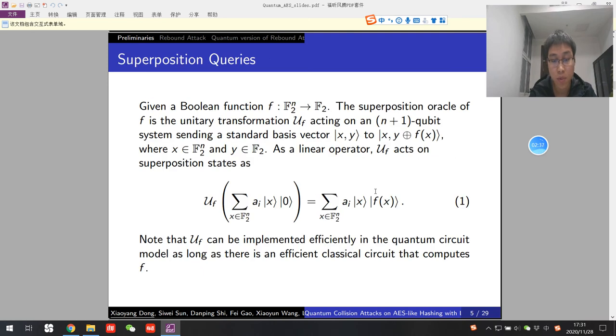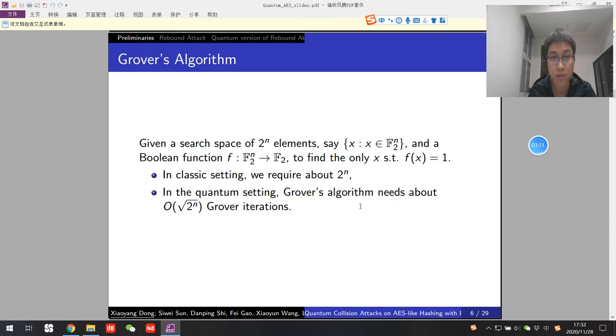The most important feature of quantum computation is that we can make superposition queries on quantum oracle. Given a boolean function f, the superposition oracle is the unitary transformation uf, sending y to y plus f(x). uf can act on a superposition state linearly, just like this.